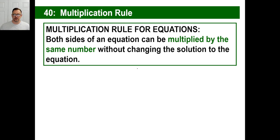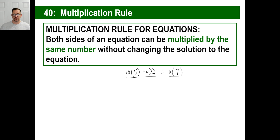In other words, let's say you have 5 plus 2 equals 7. Is that a true equation? Yes. So both sides can be multiplied by the same number. Let's multiply everything by 10 — that's 50 plus 20 equals 10 times 7, which is 70. That works. As long as you do the same thing to everything on an equation, you're fine.